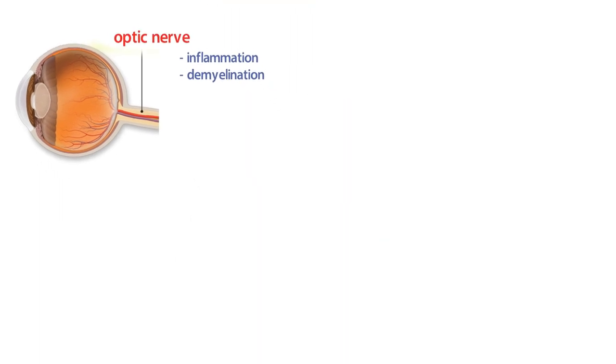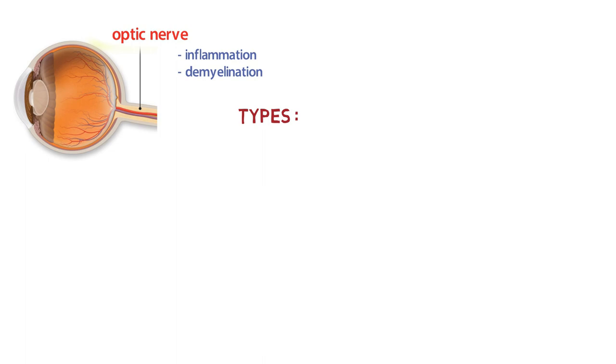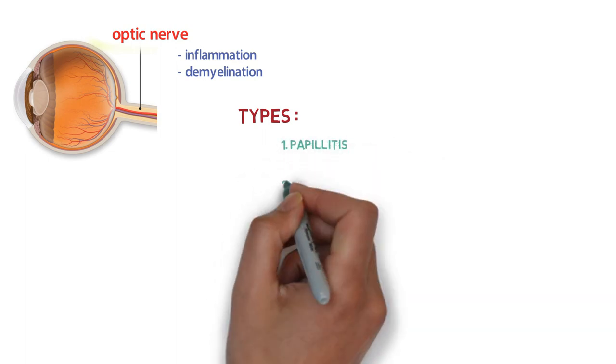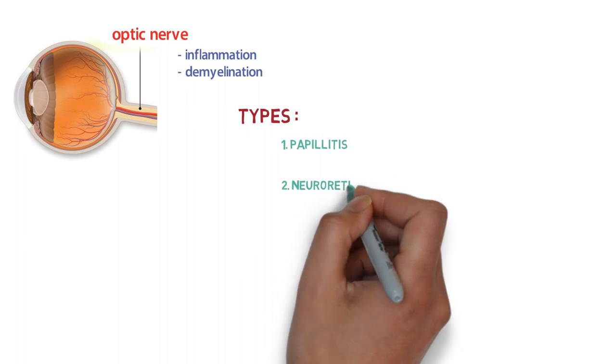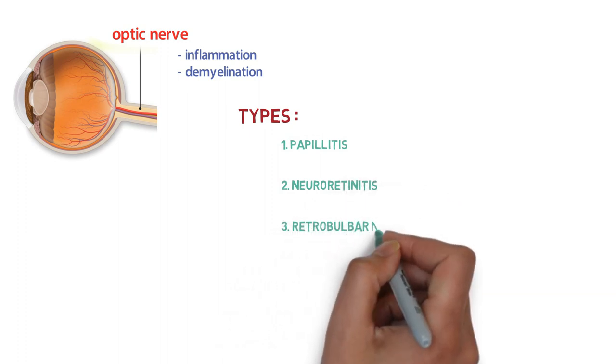What are the types of optic neuritis? There are three types: the first is papillitis, second is neuroretinitis, and the third is retrobulbar neuritis.